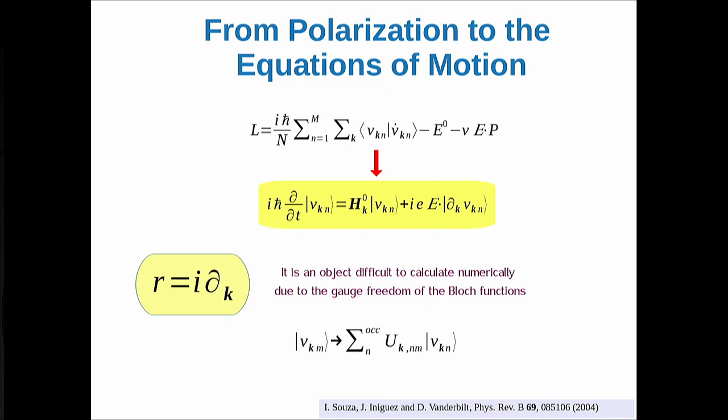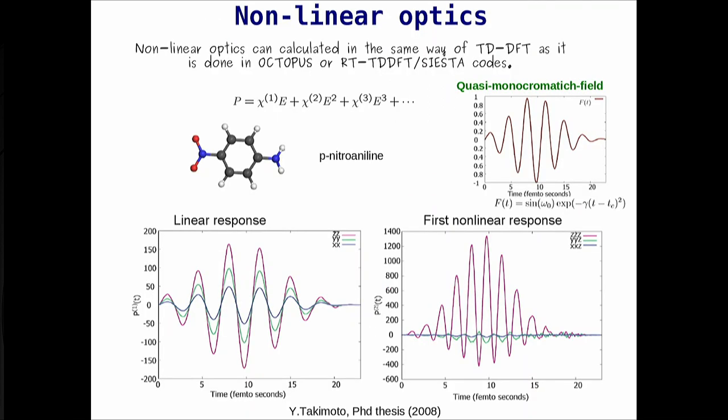With the coupling term and the polarization formula in hand, you can compute any response function you want. A typical example for a molecule: you excite with a monochromatic field, the polarization oscillates mainly at the laser frequency but with smaller oscillations at twice the frequency — this is the nonlinear response. This approach is used in real-time TDDFT codes like Octopus and Fiesta.